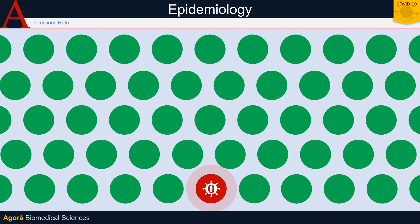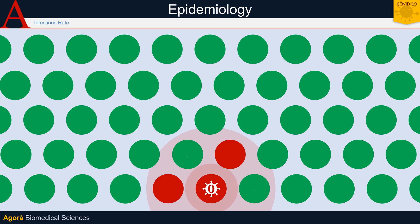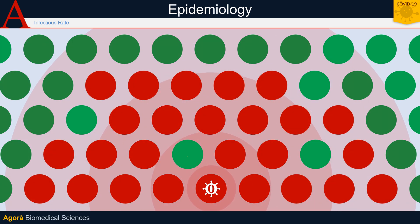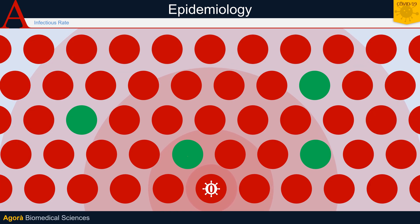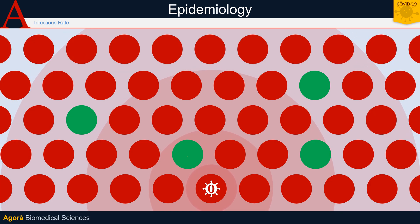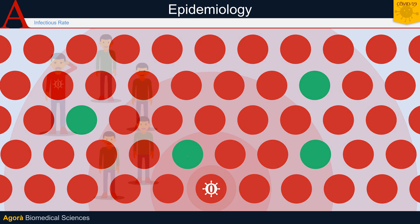The first case infects a small number of people. Now there are three infected people, and each infects another small number of people. But as the number of infected grows, the infection spreads faster. Let's try to express this phenomenon in numbers.